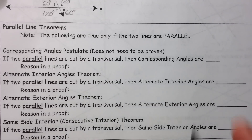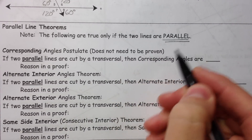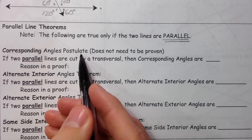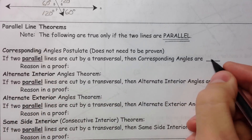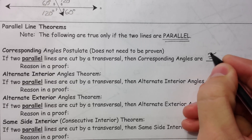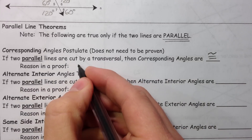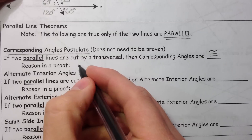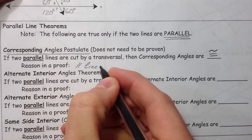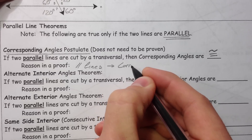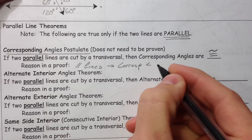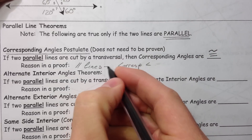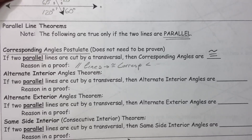If we know the two lines are parallel — and only if we know the two lines are parallel — then we know by the corresponding angles postulate, which doesn't need to be proven, that our angles are congruent. Corresponding angles are congruent. In a proof, I say either 'corresponding angles postulate' — the fancy way — or 'parallel lines tell me that corresponding angles are congruent,' or 'parallel lines imply congruent corresponding angles.'